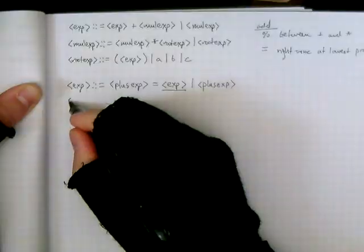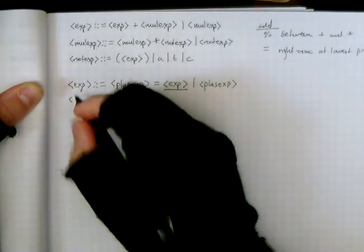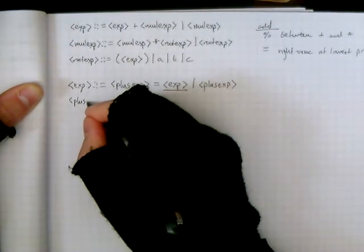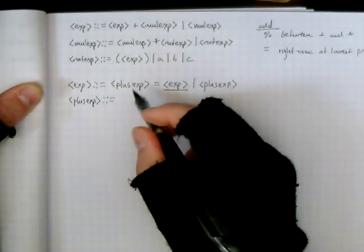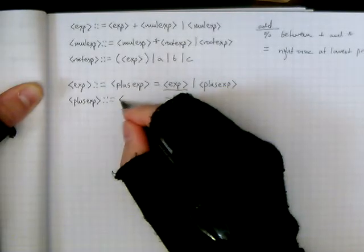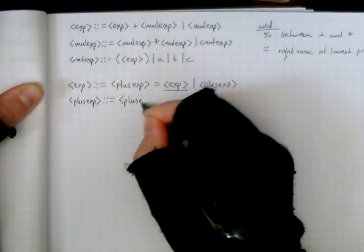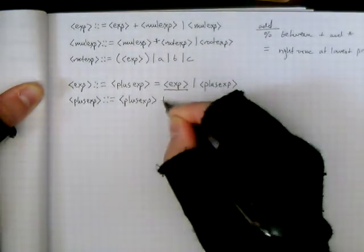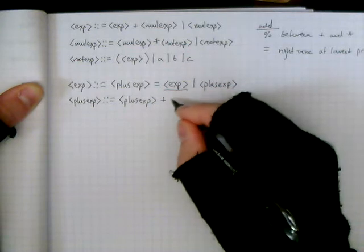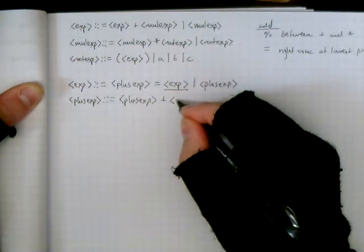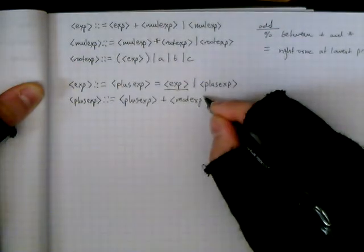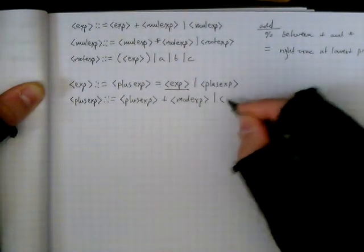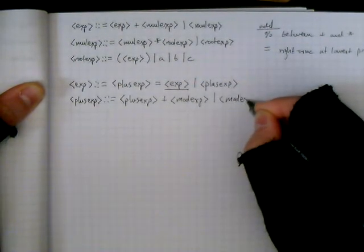So once we have done that, then we define plus exp to be what it was before. So this would be plus exp, the plus operator, and then now we are going to add a new rule, we will call it mod exp. This would be for our modulus operator, or simply mod exp.